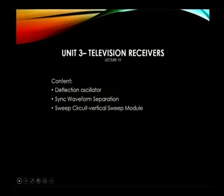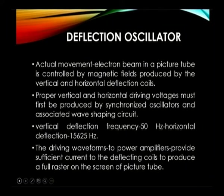We start with the deflection oscillator. As studied in the previous session, the deflection oscillator is necessary to get the deflection signal from the oscillator. This signal is sent to the deflection coils. According to the magnitude and frequency, the output from the oscillator is sent to the amplifier, which amplifies it. The output of the amplifier will give a current that will create a magnetic field in the deflection coil, which is helpful in deflecting the coil in a picture tube.